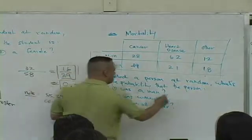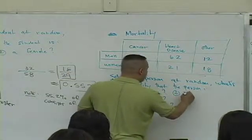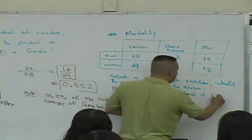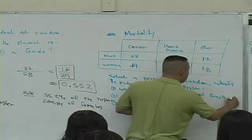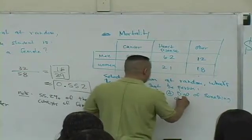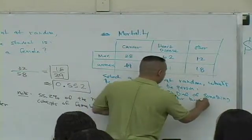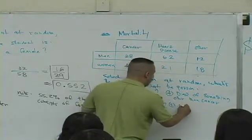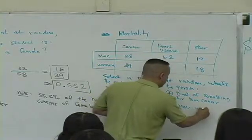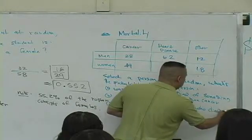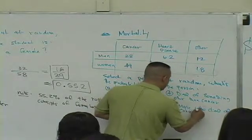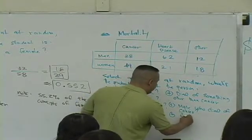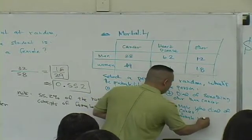Three, died of cancer. Four, died of something other than cancer. And five, was a male who died of cancer. Six, female who died.